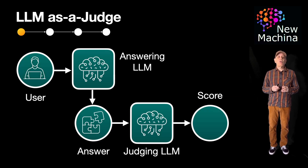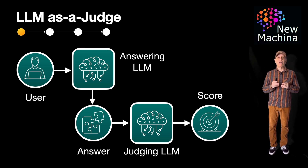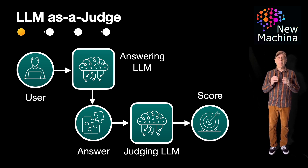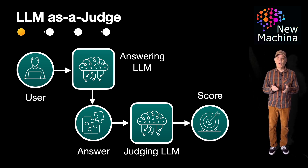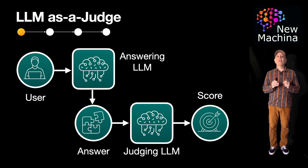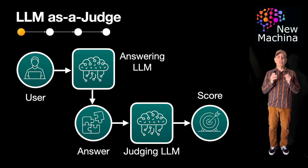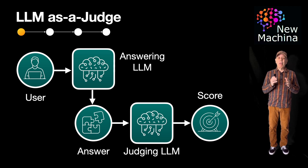The first architecture is where a single LLM acts as a judge. In this approach, a single LLM compares answers and picks a winner if there are multiple answers, or scores each one if there's just one single answer. It's efficient, but it can be biased or inconsistent.